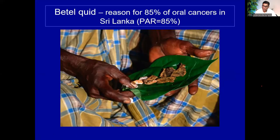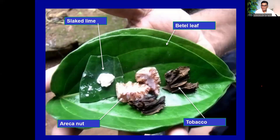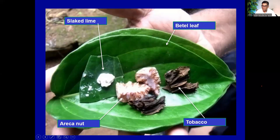In Sri Lanka, 85% of oral cancers are due to betel quid chewing — the population attributable risk. If the habit of betel quid chewing were taken away from our population, 85% of our oral cancers could be prevented. What are the carcinogenic substances in betel quid? Betel leaf does not have any carcinogens. Tobacco has 28 known carcinogens. Areca nut has three known carcinogens — relatively recent knowledge from about two decades ago. Slaked lime per se does not have carcinogens, but it increases the permeability of mucous membranes and allows carcinogenic materials to seep into the tissues.